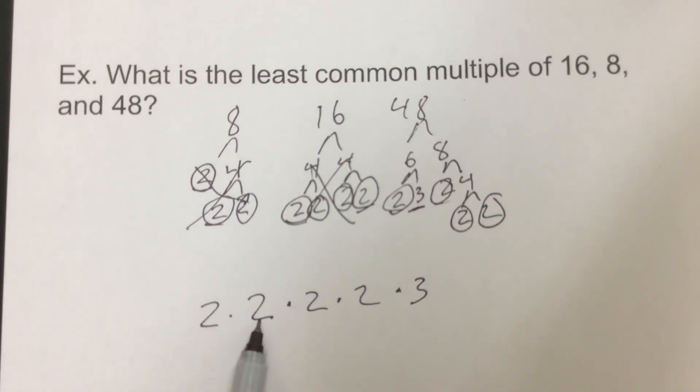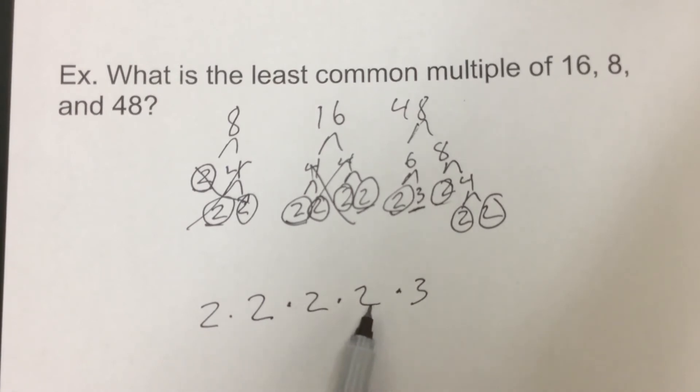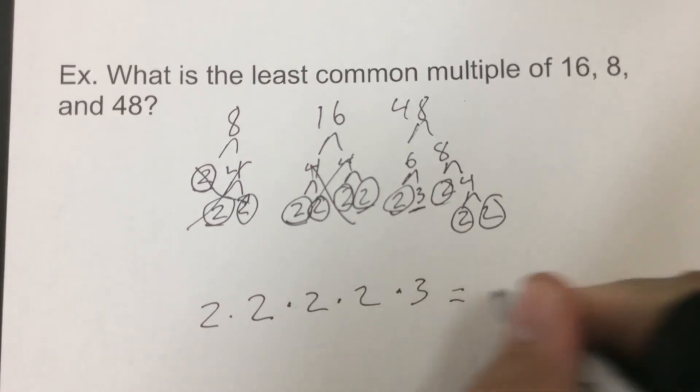So 2 times 2 is 4, 4 times 2 is 8, 8 times 2 is 16, 16 times 3 is 48.